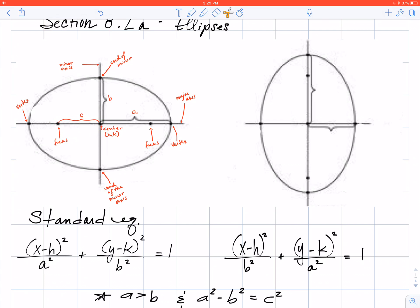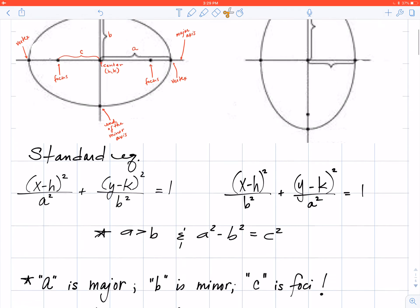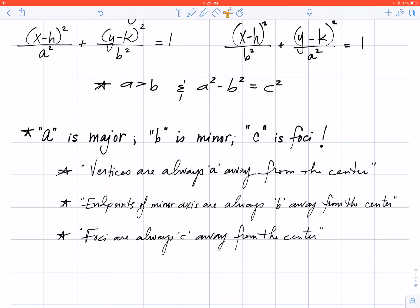I actually have those three statements down below if you'd like to scroll down just a bit, the three starred statements there. Distance a deals with my vertices. So the vertices are always going to be a away from the center. The endpoints of the minor axis are always going to be b away from the center. And then thirdly, my foci are always going to be c away from the center.